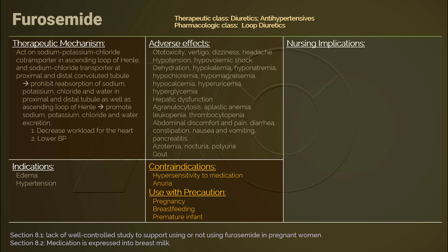Furosemide is used in pregnancy only if the benefits outweigh the risks, as there is no well-controlled study to support its use in pregnancy. Furosemide is also excreted into breast milk, so special caution should be taken when using it during breastfeeding. It has been found that using furosemide in the early weeks of life in premature infants increases the risk for persistent patent ductus arteriosus.